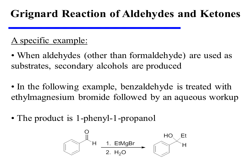In contrast, when aldehydes other than formaldehyde are used as substrates, secondary alcohols are produced. In the following example, benzaldehyde is treated with ethylmagnesium bromide, followed by an aqueous workup, to produce 1-phenyl-1-propanol, a secondary alcohol, as the product.